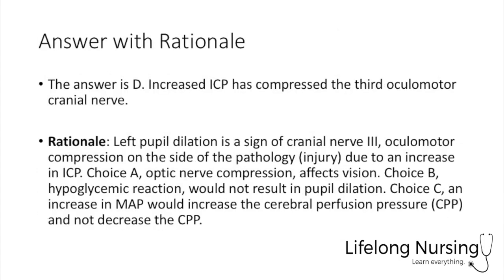The answer is D: an increase in intracranial pressure has compressed the third cranial nerve, which is the ocular motor nerve. Left pupil dilation is a sign of cranial nerve 3 compression and is on the side of the injury. Choice A is optic nerve compression, which only affects vision. Choice B, a hypoglycemic reaction, would not result in pupil dilation. Choice C would actually increase cerebral perfusion pressure.